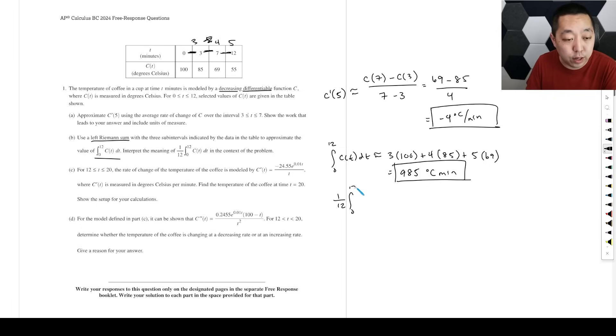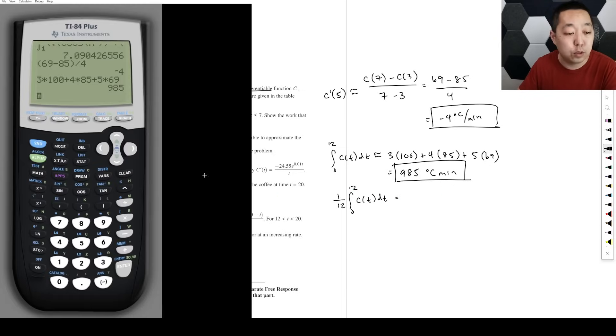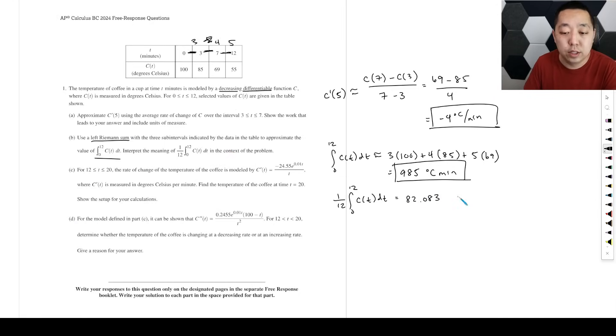1 over 12 times the integral from 0 to 12 of C(T) is the average value, so you're going to divide that by 12 to get this thing. Divided by 12, you're going to get 82.083. I don't know if you need to calculate it because they just ask you to interpret it. 82.083 degrees Celsius is the average temperature of the coffee over T equals 0 to 12 minutes. That's the context there. This is all part B, now we're doing C.